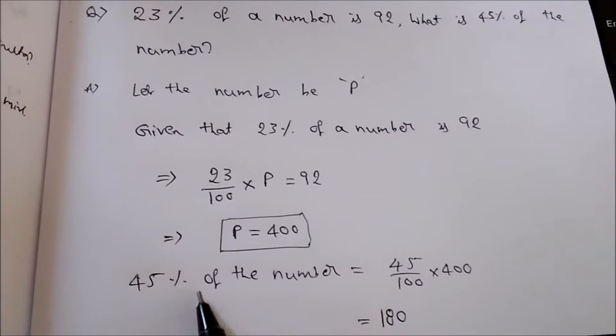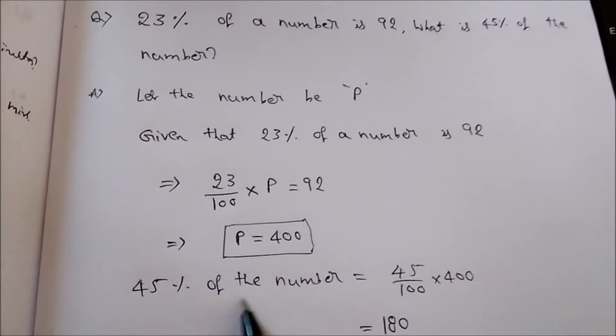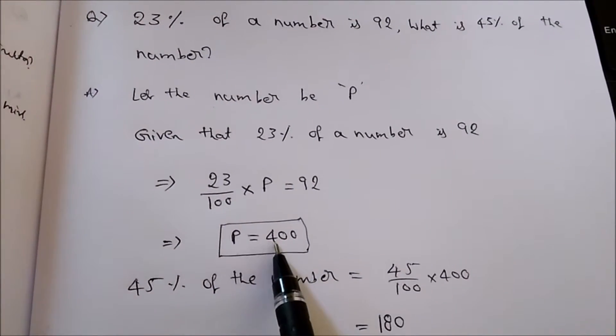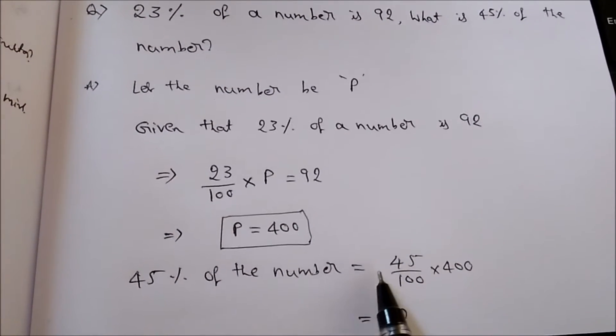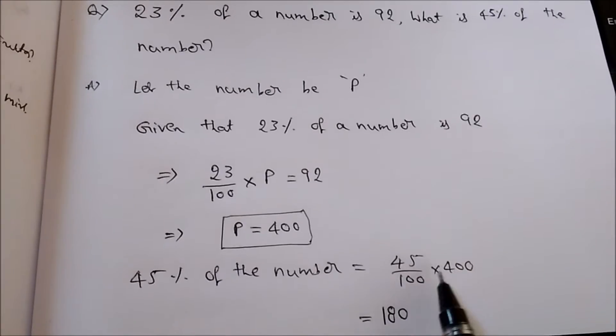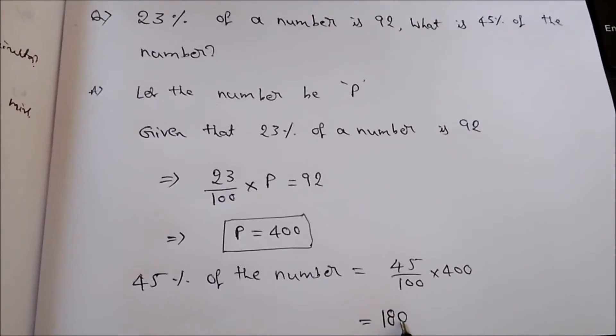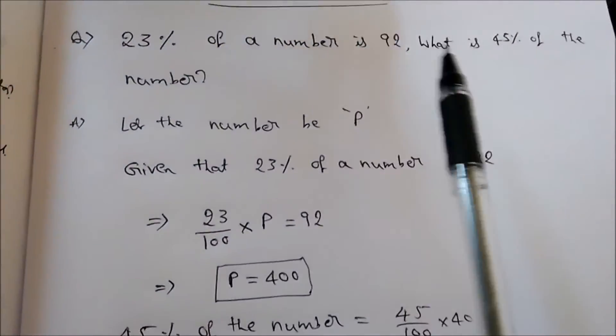Of means into multiplication, okay. The number, what is the number? It is 400 as we found out. So 45 by 100 into 400, solve this, you will get the value 180. So the answer for this question is 180.